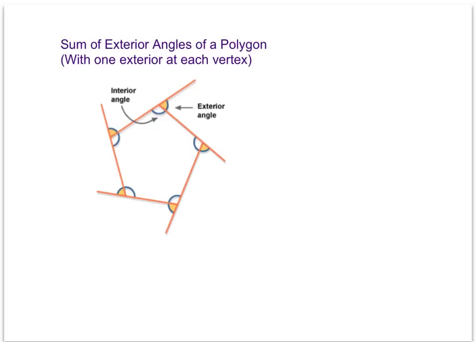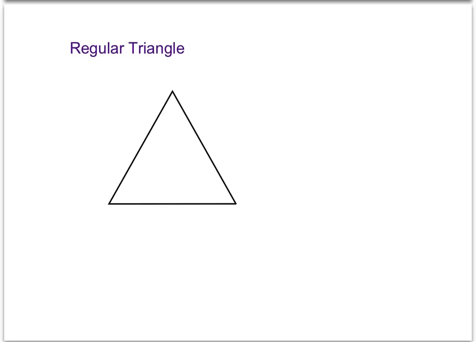Before we get to the problems, let's just take a look at a regular triangle. Remember, regular means that all sides are equal and all angles are equal. So for a regular triangle, if the interior angles equal 180 degrees, we know each interior angle would have to be 60 degrees. We can form the exterior angles by extending the sides in the same direction all the way around that triangle.